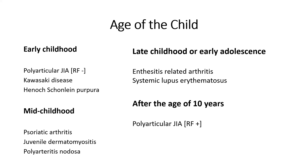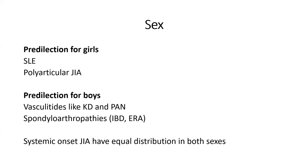The sex of the child is also relevant. SLE and polyarticular JIA are more common in girls, while Kawasaki disease, spondyloarthropathy, inflammatory bowel disease, and enthesitis-related arthritis are more common in boys. Systemic juvenile idiopathic arthritis — characterized by joint pain and a classic quotidian (daily) fever pattern — shows no sex predilection.